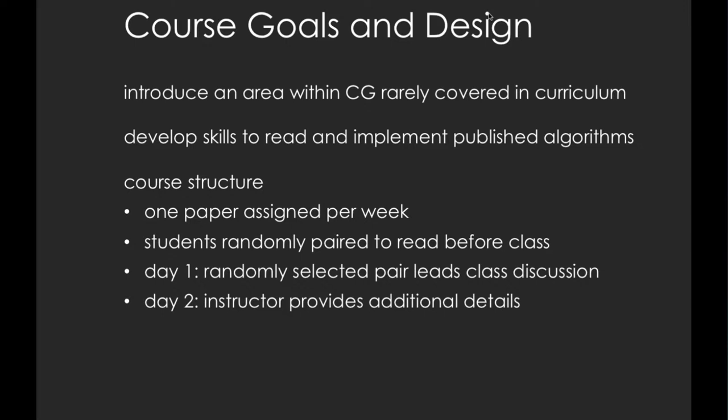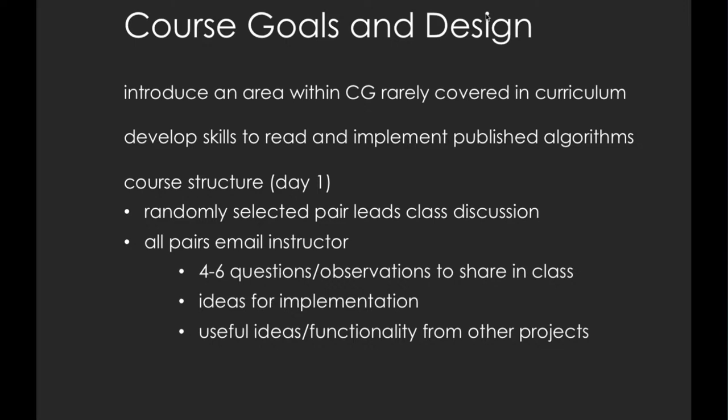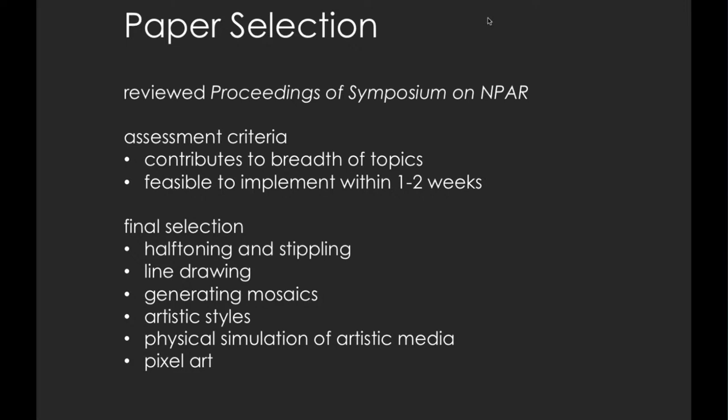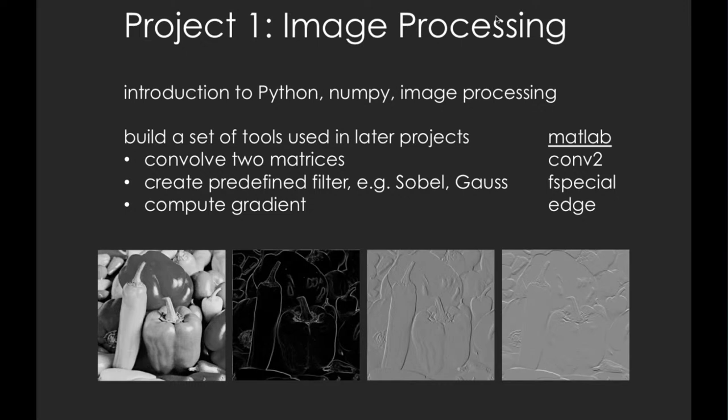The course design was similar to a flipped classroom style, organized around weekly readings of papers. Students were randomly paired in reading groups with partners changing each week, and one pair led the classroom discussion. On the second day, the instructor filled in details or provided additional background. Each pair was expected to send questions, observations, and implementation ideas to the instructor before the class discussion. Paper selection was based on review of the symposium on NPR proceedings — if a paper added a new topic and seemed feasible to implement within a week or two, it was included.